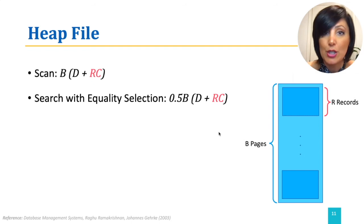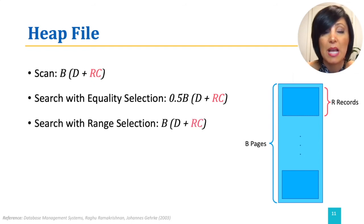For the search with range selection, for example, a search for all records with the values of field greater than 1 and less than or equal to 10, all the records on the heap file should be scanned. This is because in a heap file, the qualifying records may appear anywhere in the file, and we have to scan the whole file to get there.